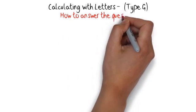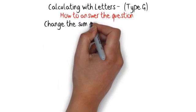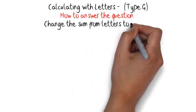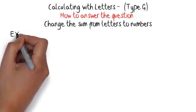How to answer the question: the first thing you should do is change the sum from letters to numbers. Then all you have to do is answer the sum normally. Once you have your number answer, you need to change the answer back to a letter using the options you are given at the start of the question.